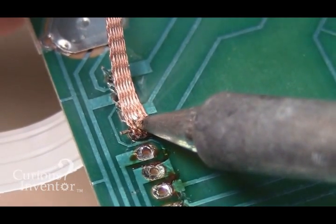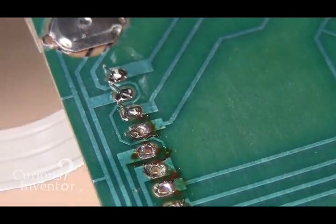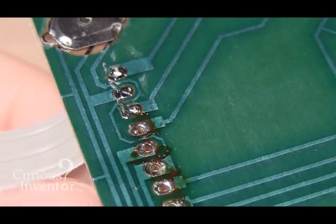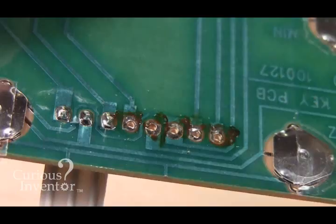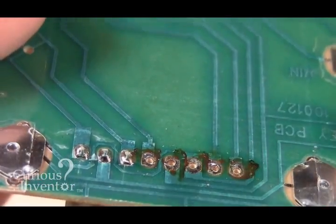Now hold the wick over the joint, and gently press the iron on top of it. Continue holding the wick on the joint for several seconds to make sure all the solder is removed. This particular type of joint is very easy to desolder.